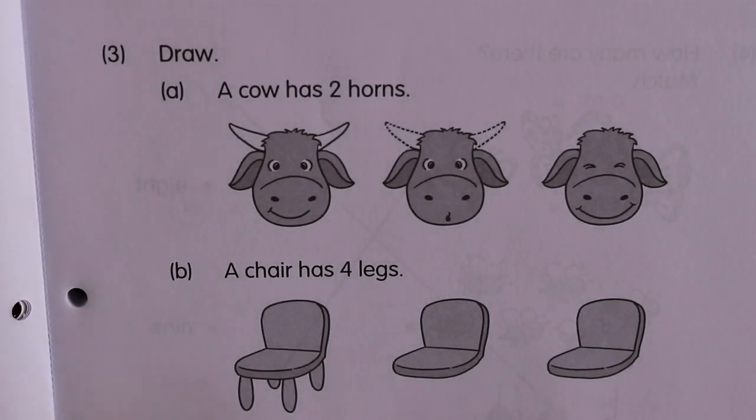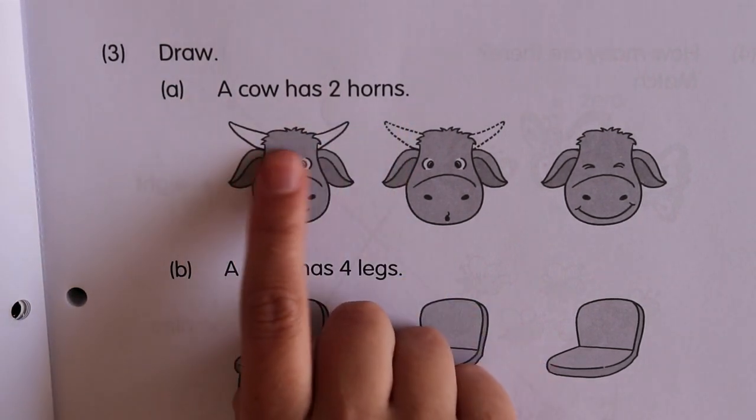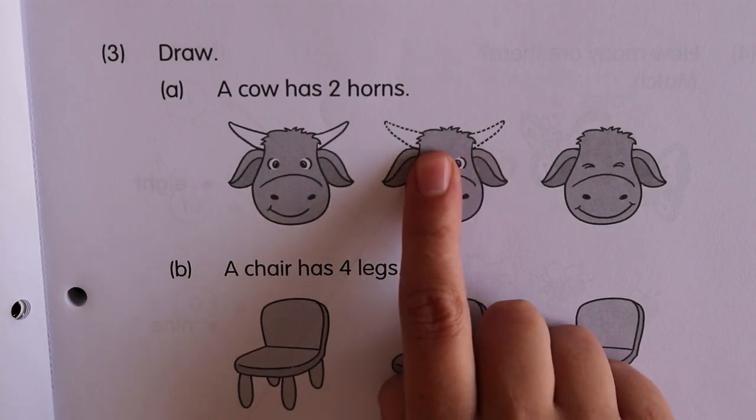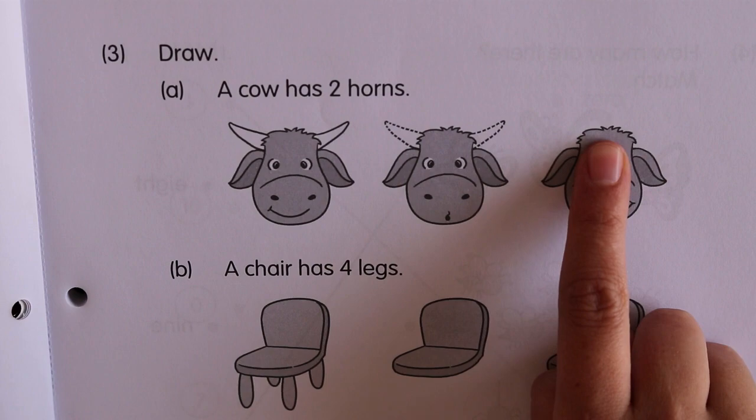Page 3 says draw. A cow has two horns. So there they've given the cow two horns. Here you have to trace the two horns with your pencil and there you have to draw two horns for that cow.